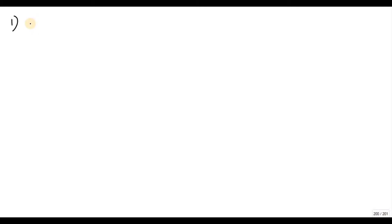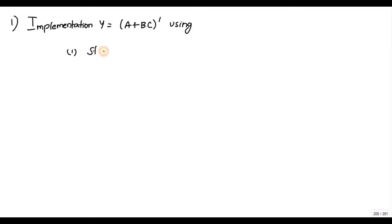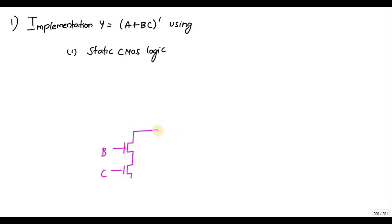In this video we are going to discuss implementation of Y = (A + BC)̄ using static CMOS logic. If I want to implement A + BC, you can see there are three inputs A, B, C, so you have NMOS and PMOS networks. B and C are in multiplication, so you have to connect B and C in series. B and C in parallel with A represents addition.